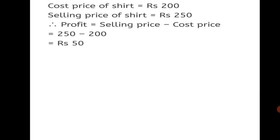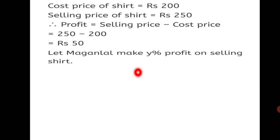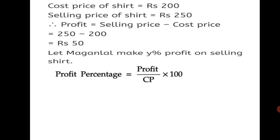Now let's find out for shirts. Cost price of shirt is Rs. 200 and selling price of shirt is Rs. 250. Profit = 250 − 200 = Rs. 50. Let Maginlal make Y percent profit on selling shirt. Profit% = (Profit / CP) × 100. Substituting: Y = (50 / 200) × 100. Reducing zeros: 50 ÷ 2 = 25. Therefore Y = 25%.